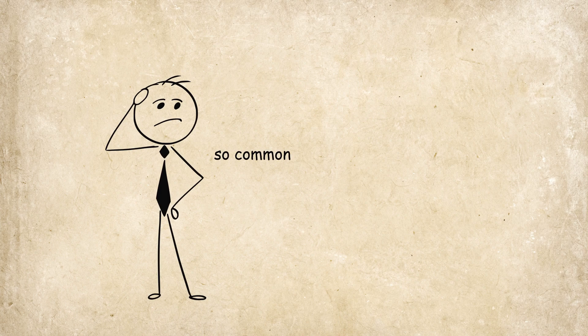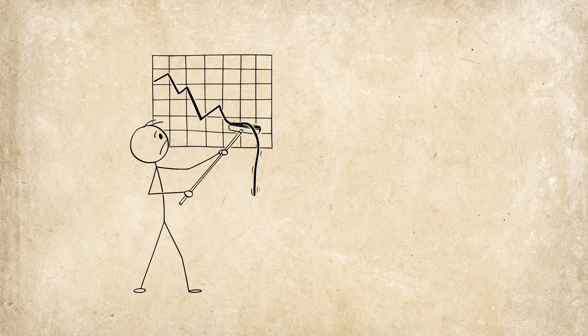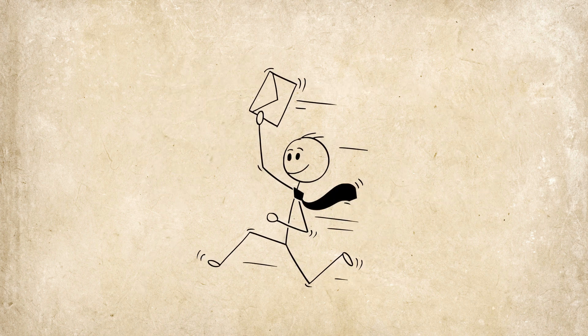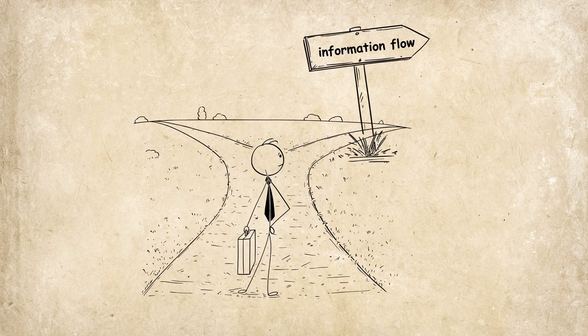Your brain treats this passively reviewed information like background noise, an ad you instinctively skip. This phenomenon is so common it has a name: the forgetting curve. Without intervention, the curve shows that we are destined to forget most of what we learn. But the good news is you can beat the curve. So what's the first step to plugging the leak? It starts by changing the direction of information flow.